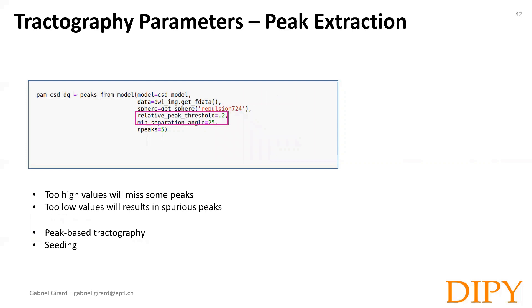When extracting the peaks from the ODF using the peaks_from_model function, two parameters are of interest and might need to be adjusted to your reconstruction model and the noise level of your data. The first is the relative peak threshold — orientations with ODF value inferior to this value will be considered spurious peaks and not be extracted. The second is the minimum separation angle. Most reconstruction methods cannot distinguish peaks below 30 degrees or so, but in some cases you might want to relax this constraint and allow peaks with smaller angles between them. Ideally, you want these parameters to allow extraction of accurately estimated peaks while reducing the amount of spurious peaks.